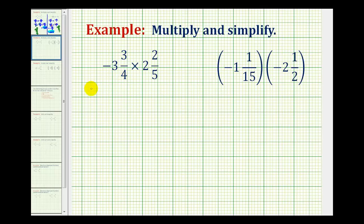So for negative three and three-fourths, we'll have a negative fraction with a denominator of four, and the numerator would be four times three plus three, which is equal to 15.